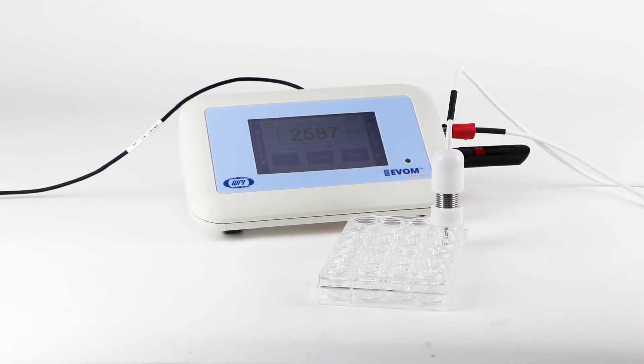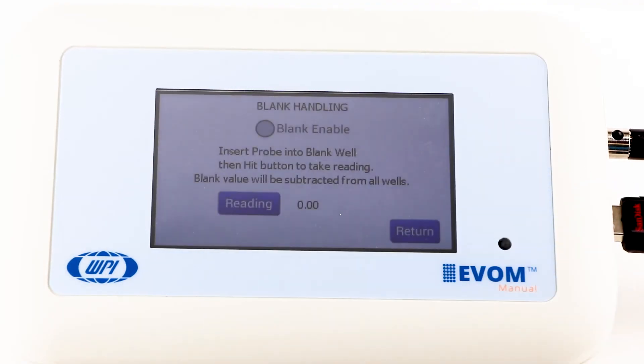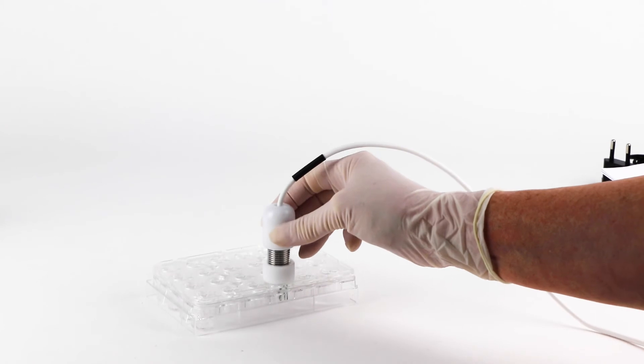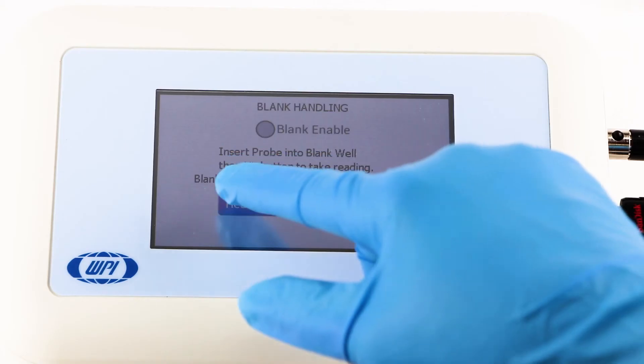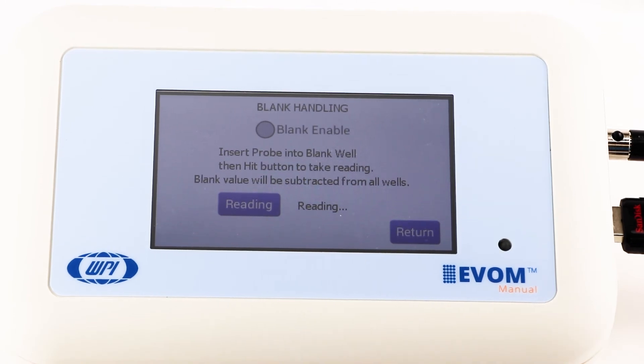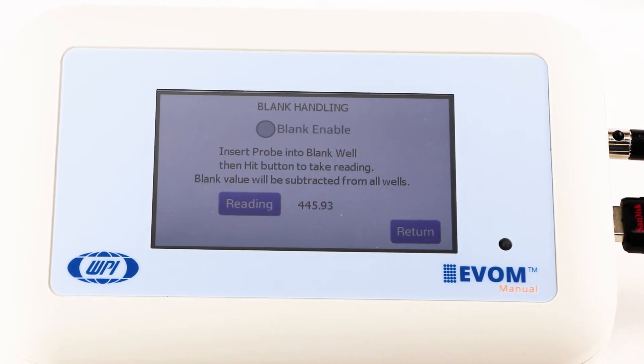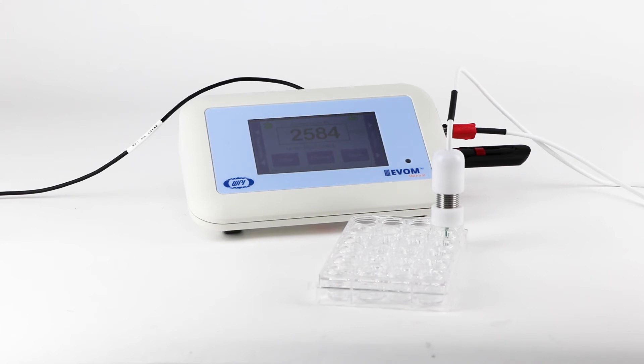To subtract a blank trans well, including the fluid and the electrode resistances, first press the blank handling button. Then place the electrode in a blank well and press reading. Press the blank enable radio button to automatically subtract that blank value from your future readings.